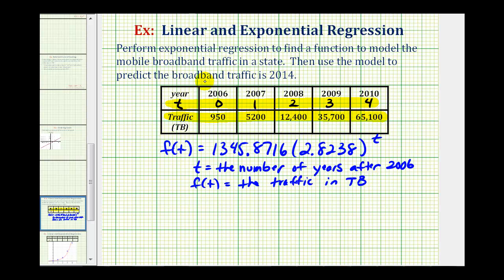Now before we go back to the calculator, let's determine the value of t to make the prediction for 2014. t is going to equal 2014 minus the base year of 2006, so t equals eight to make the prediction for 2014. So we need to find f(8).